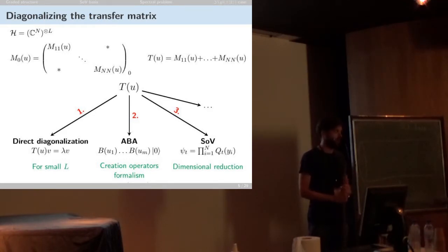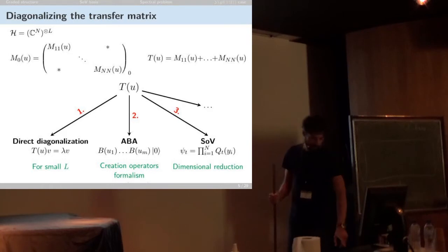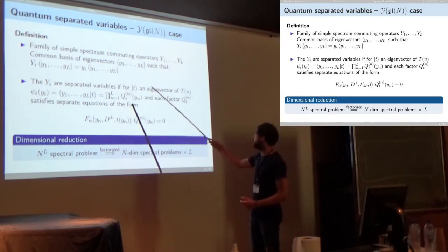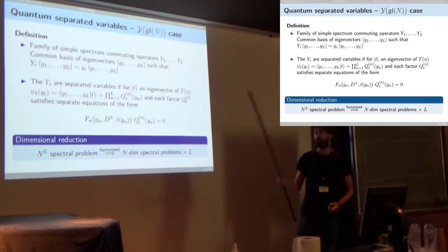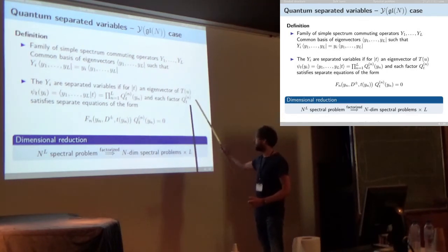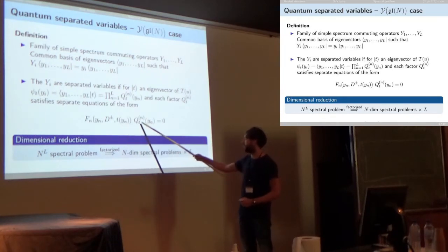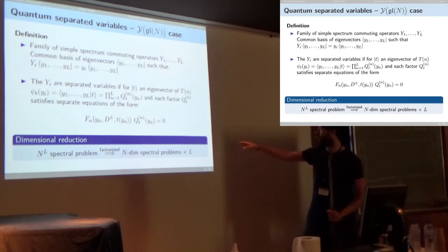The idea of separation of variables originates from classical theory: rewrite your equations in the right coordinates, the right reference frame — the separated variables — and you're able to decouple them and solve them independently. For a quantum system, you first construct a separated basis by taking a family of simple-spectrum commuting operators. Their common eigenvectors form the basis, labeled uniquely by their eigenvalues. These operators are separated variables for your transfer matrix T, and for any eigenvector the wave function factorizes, with each factor satisfying a separated equation involving only one variable. This gives a dimensional reduction from an N^L problem to L independent N-dimensional problems.